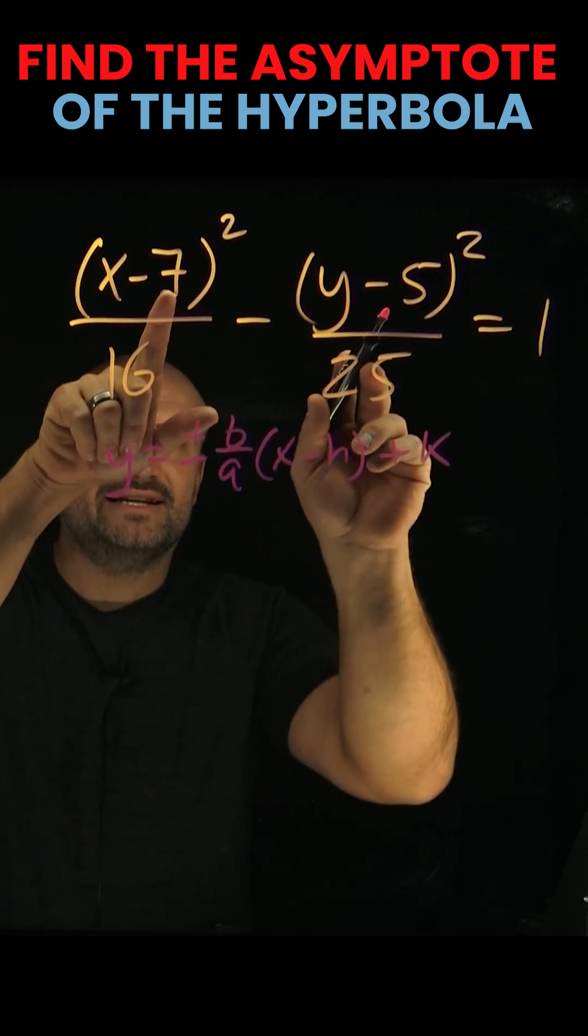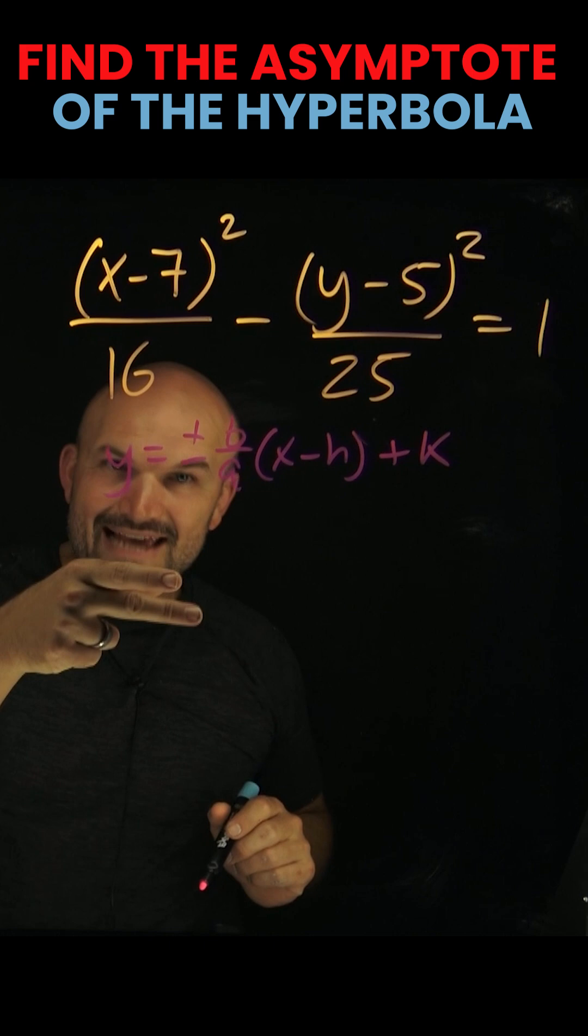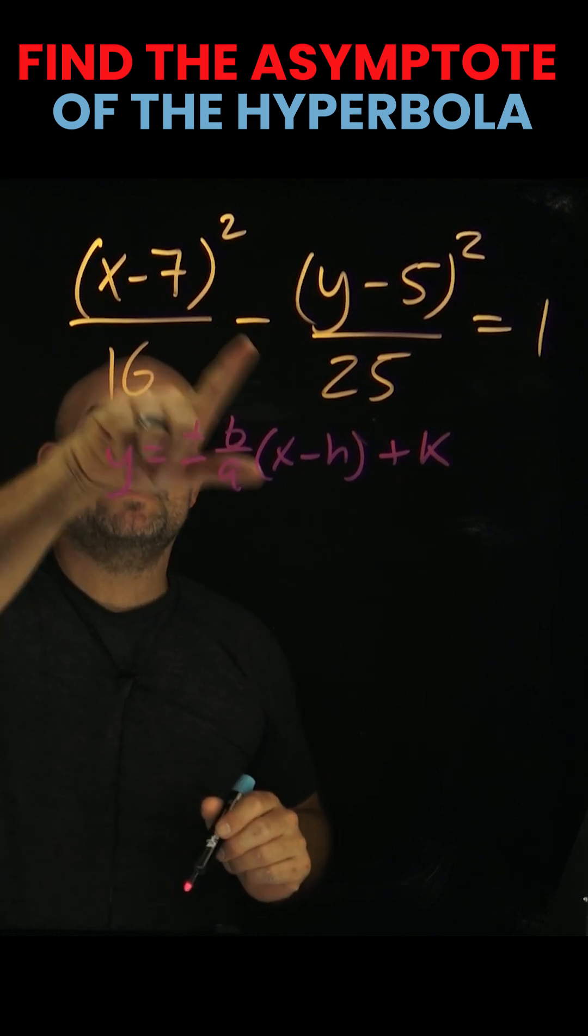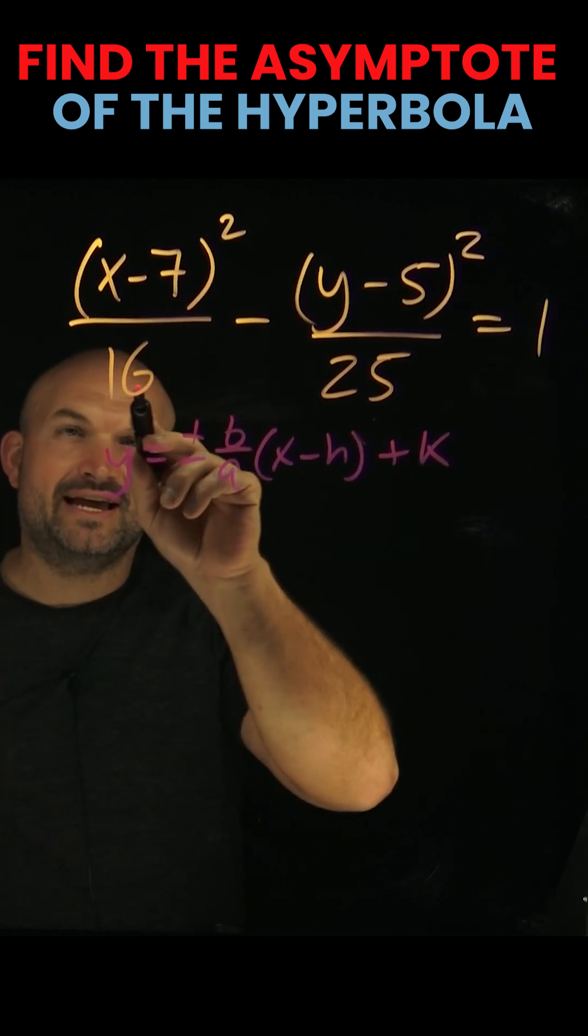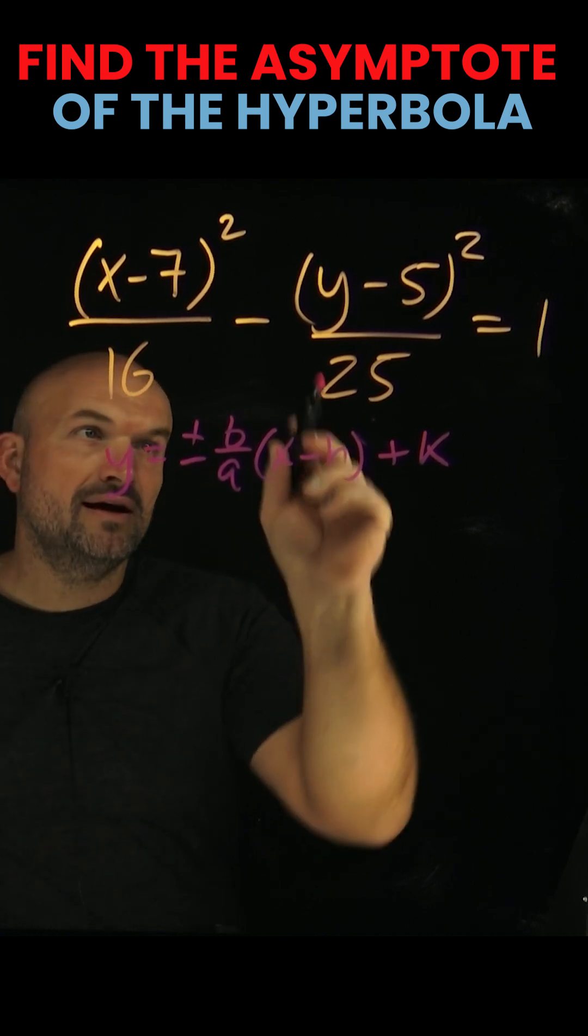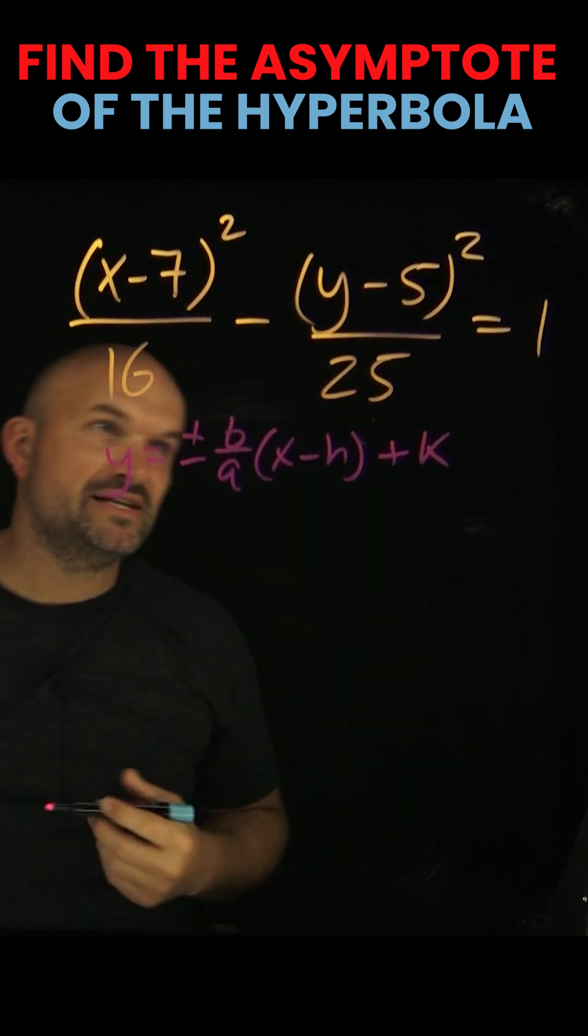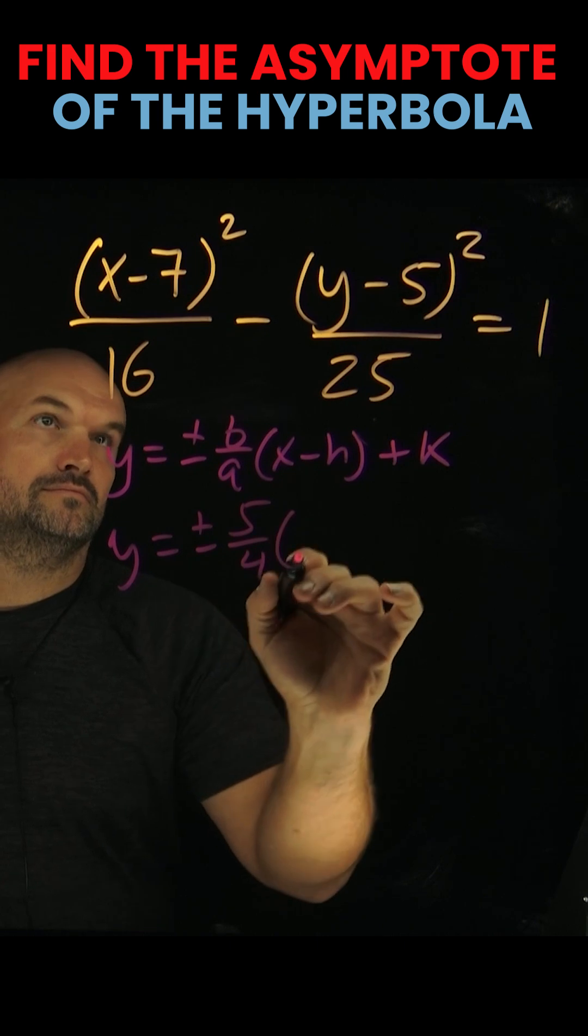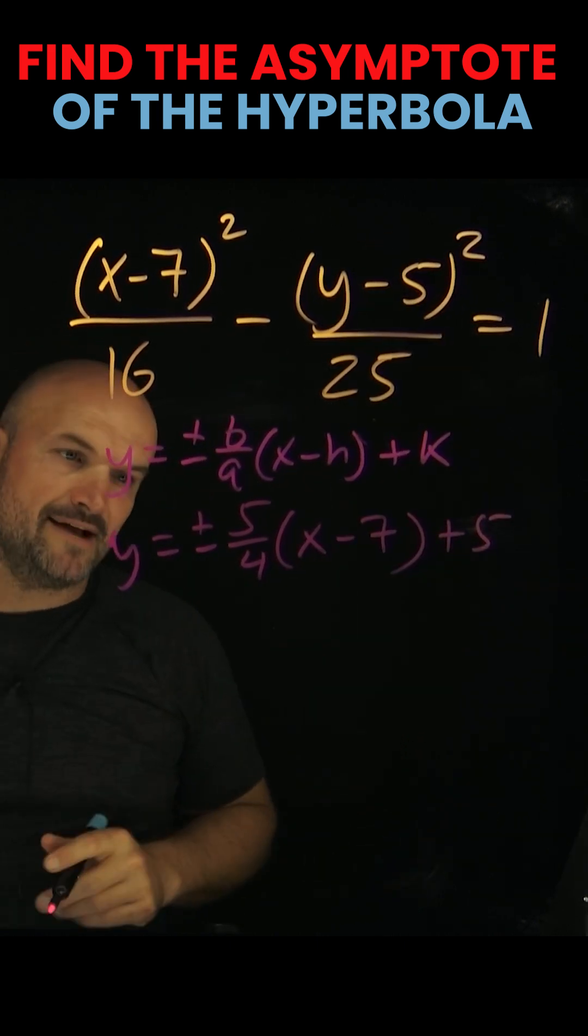Well, I already know h and k, right? That's going to be my 7 and my 5. My b and my a, though, remember, this is always a squared minus b squared. So I have a squared is 16. That means a is 4. And my b squared is 25. So therefore, my b is going to be a 5. And again, it's plus k. That's why I'm doing the opposite side.